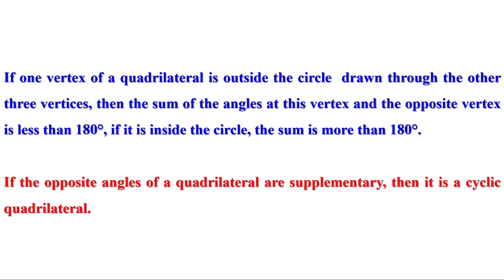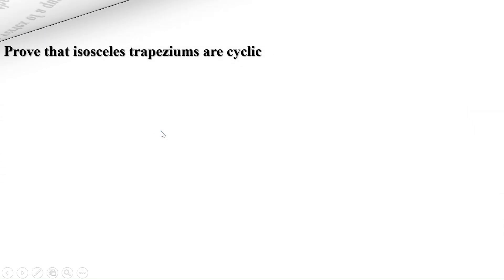This is a method to check whether a quadrilateral is cyclic or not — no need to draw the circle. Just observe the opposite angles and find their sum. If it is 180 degrees, it is a cyclic quadrilateral; otherwise, it is not.